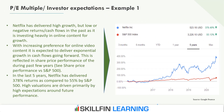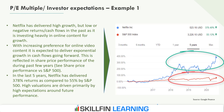Take the example of Netflix. Netflix has delivered high growth but low or marginal cash flows in the past, as it is investing heavily in online content for future growth. With increasing preference for online video content, it is expected to deliver exponential growth in cash flows going forward. This is reflected in high PE multiples of Netflix, resulting in high TSR. Netflix has delivered around 380% TSR compared to 55% by S&P 500, primarily driven by high investor expectations reflected in high multiples.